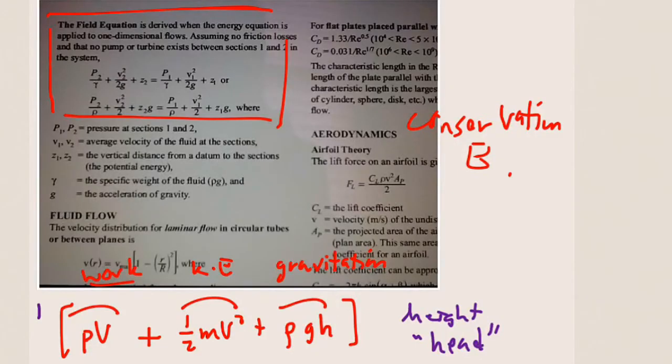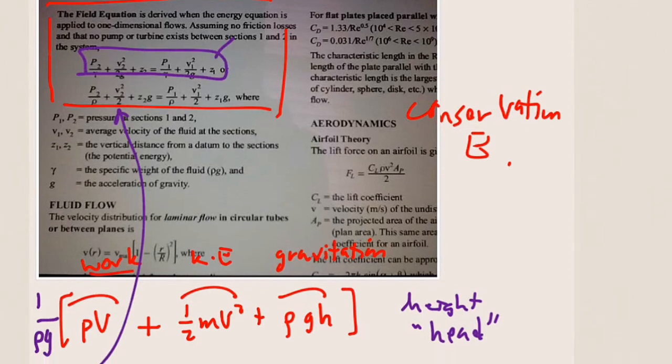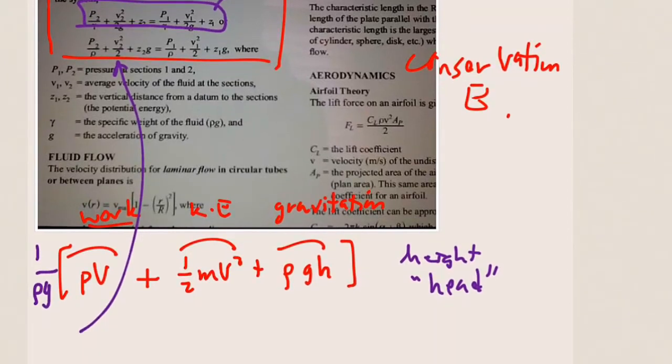1 over ρ times gravity, every term here, and converted it into the format that you see here, so that each one of these terms, essentially, each of these terms is expressed in length. So, this P₁ over specific weight of the fluid is, that the units of this are actually, you can convince yourself of this, are actually length.